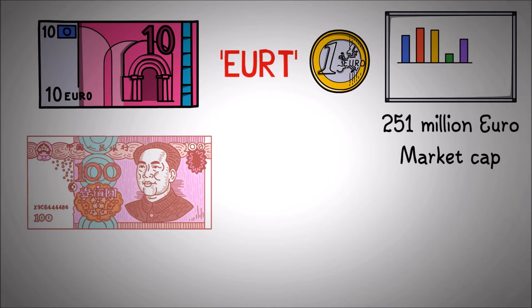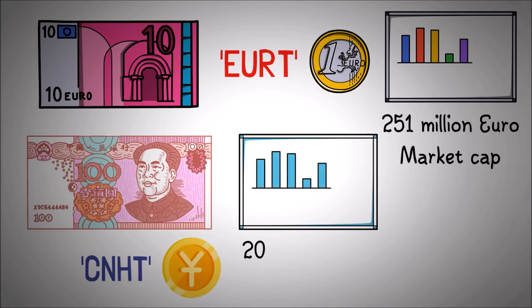Similarly, the offshore Chinese yuan-backed Tether token is called CNHT and is also pegged to the value of 1 Chinese yuan. According to its website, the CNHT token had a market capitalization of approximately 20 million offshore Chinese yuan as of April 2022.